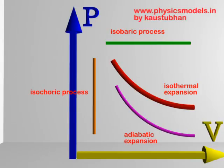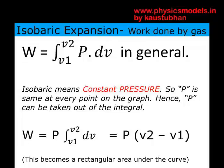We should now look at the work done by the gas in an isobaric process and in an isochoric process using the same general formula, integral of P·dV. For isobaric expansion — the green horizontal line in the graph — P is constant, so only V is changing. The area under the curve becomes a rectangle. Since P is constant it comes out of the integral, leaving just the integral of dV, which gives V2 - V1. So work done is W = P·(V2 - V1).